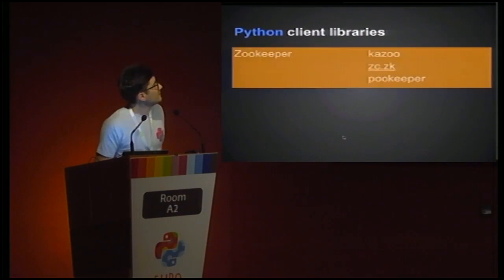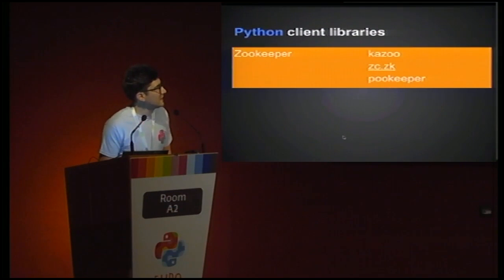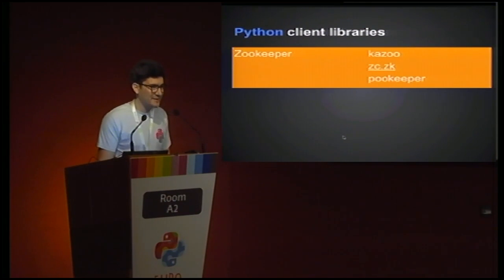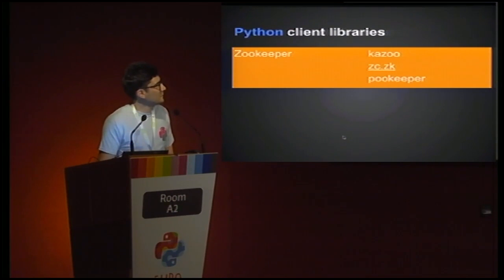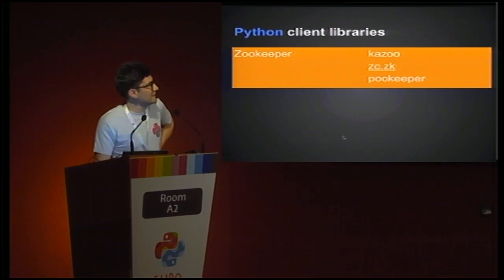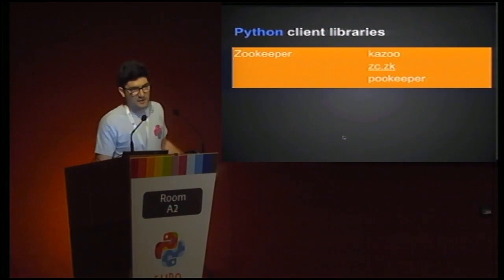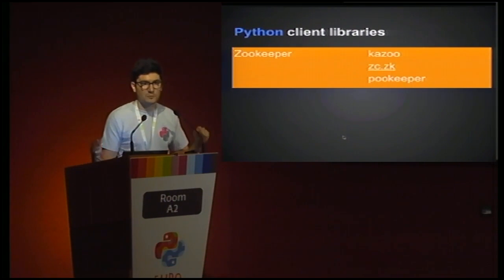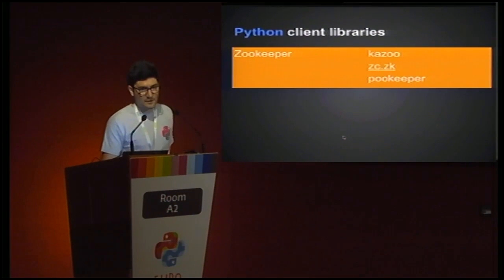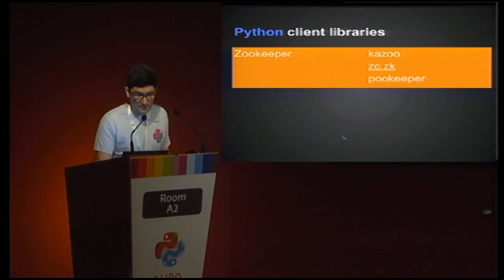Let's look at Python client libraries for each technology. For ZooKeeper there's Kazoo, ZCZK, and others. We'll use ZCZK, which underneath uses Kazoo — you can see it as a service-discovery-oriented wrapper around Kazoo, which is pretty handy.